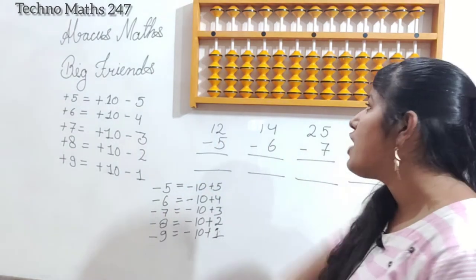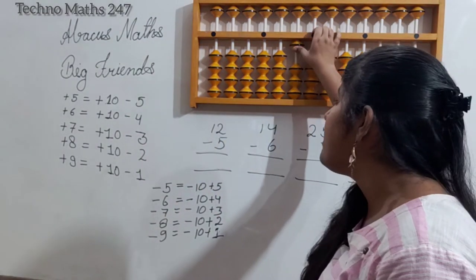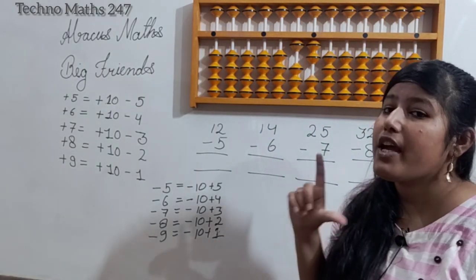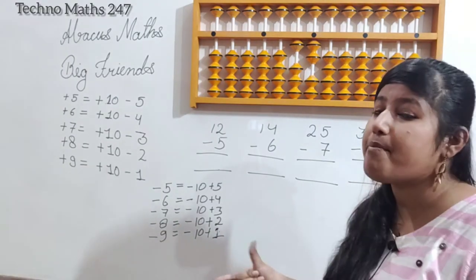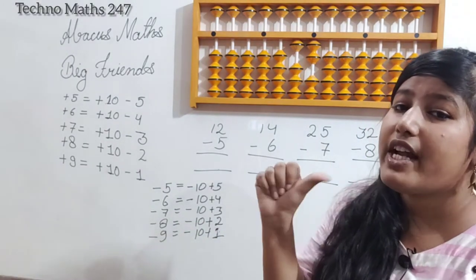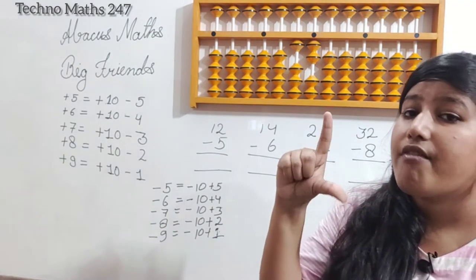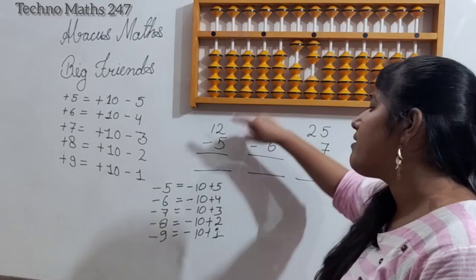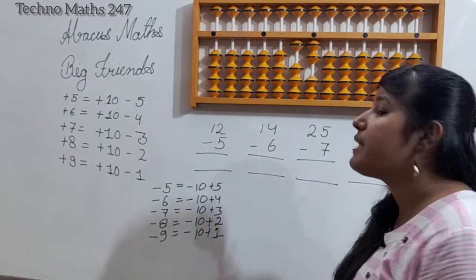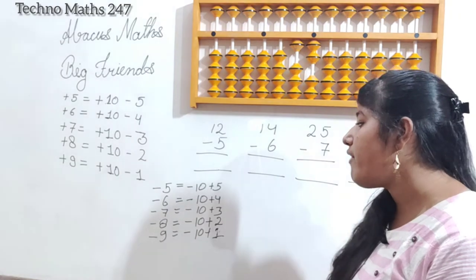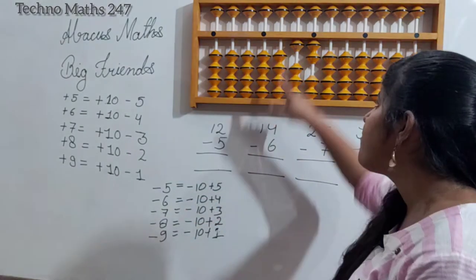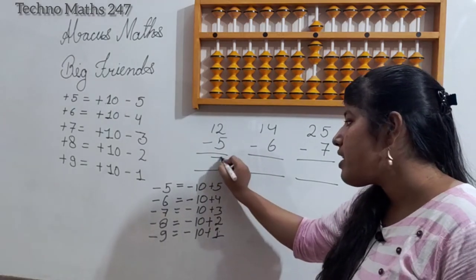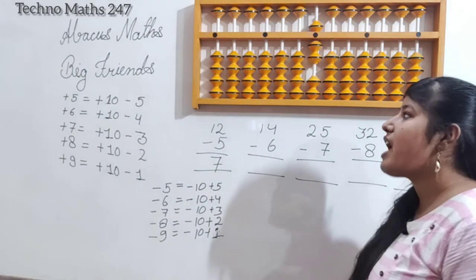Our first subtraction question: 12 minus 5. We place 10 on the 10's rod and 2 on the 1's rod, giving us 12. Always remember the use of fingers — when we uplift a bead we use our thumb, and when we push it down we use our four fingers. Now, minus 5: we don't have 5 to subtract, so we apply minus 10 plus 5. The answer is 7.